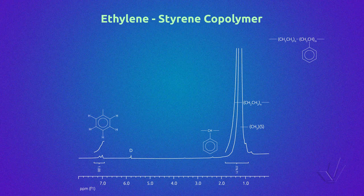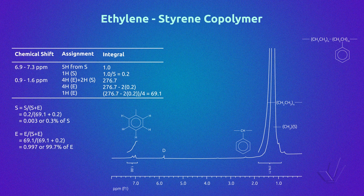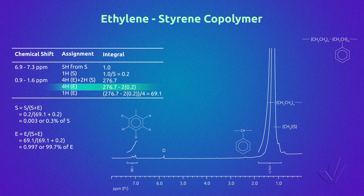Copolymers containing aliphatic and aromatic protons can also be studied by proton NMR, as in the ethylene-styrene copolymer. The aromatic proton signal corresponding to styrene appears in a very different region compared with the rest of the aliphatic protons. In this way, the amount of each comonomer is easily obtained. The integral of 1 proton of the styrene unit is obtained by dividing the aromatic resonance by 5, as there are 5 protons in this integral. The protons of the ethylene unit are obtained using the aliphatic signal, discounting the 2 aliphatic protons of the styrene unit that are superposed.